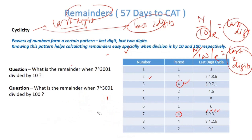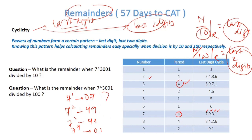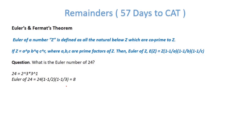For last two digits, these also form a pattern. For 7: 7¹ gives last two digits 07, 7² gives 49, 7³ gives 43, 7⁴ gives 01. The period is again 4. So for 7³⁰⁰¹, divide power 3001 by 4, remainder is 1, meaning the last two digits are the same as 7¹, which is 07.